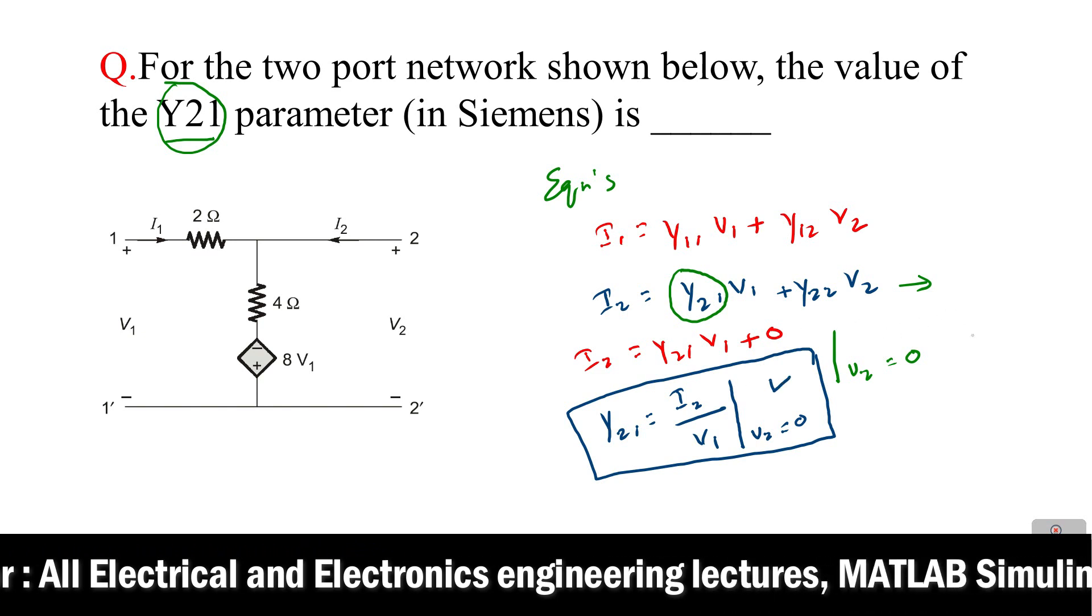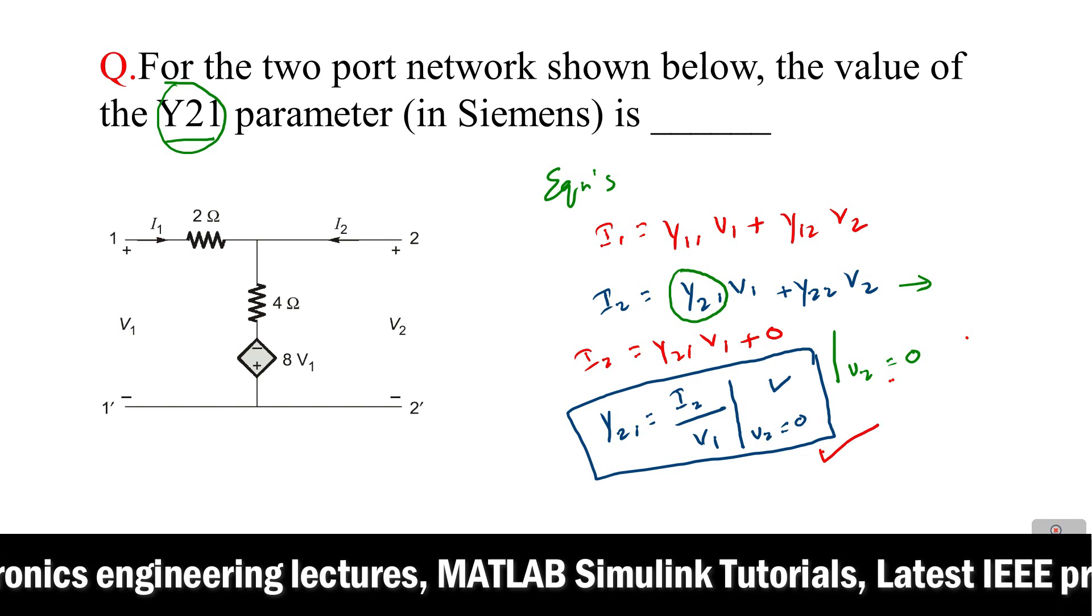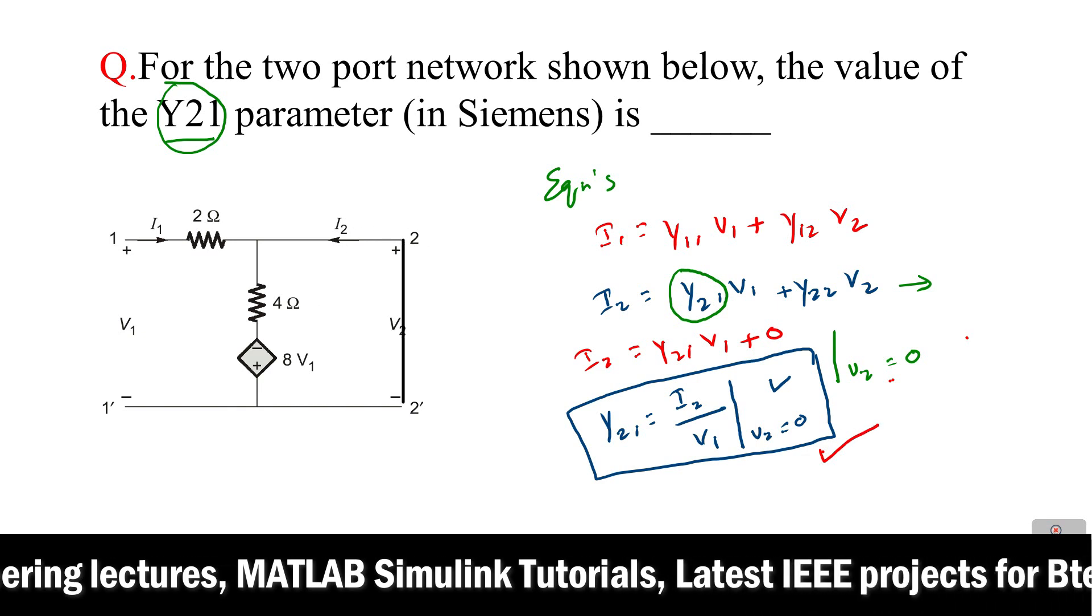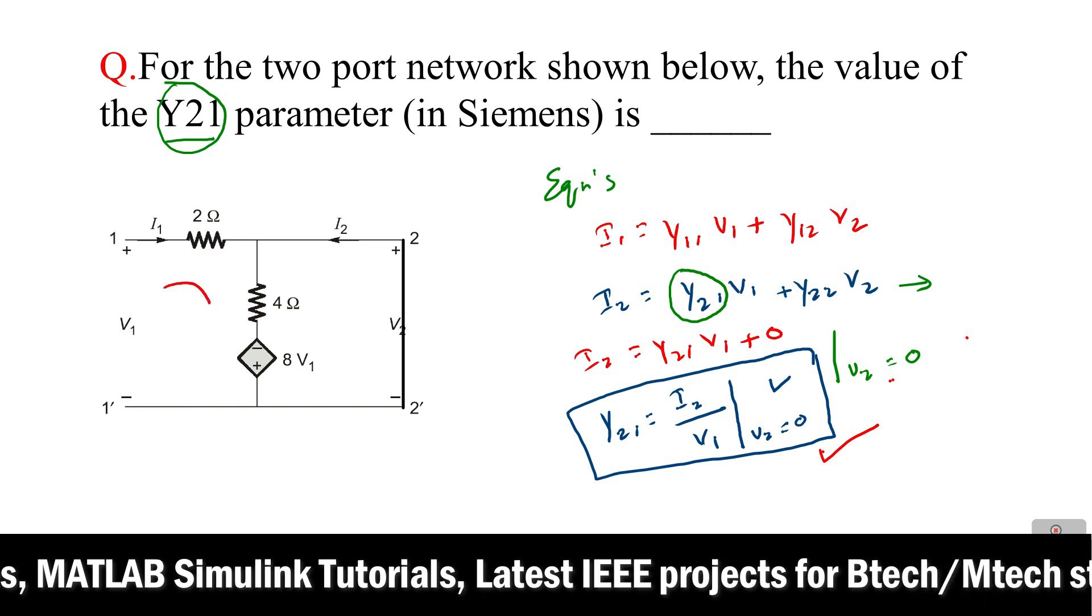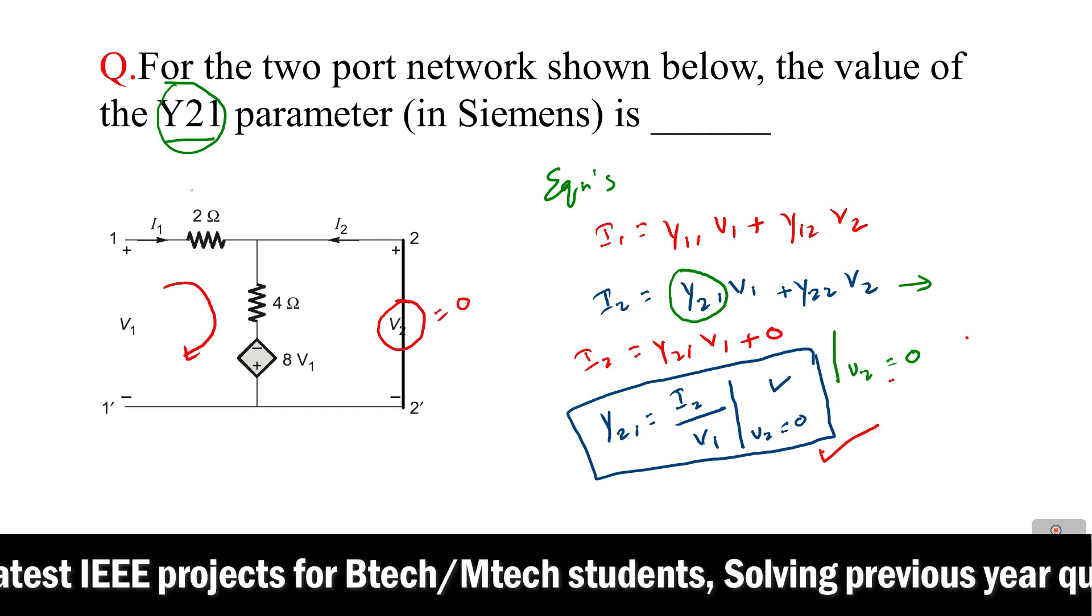Here we can observe we can find out the Y21 value when v2 equals 0, which means in this two-port network this v2 will be short-circuited. Now just apply KVL for this loop.